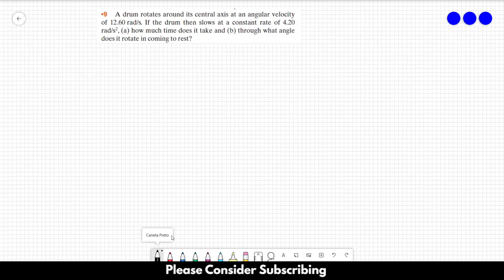Number 9. A drum rotates around its central axis at an angular velocity of 12.6 radians per second. If the drum then slows at a constant rate of 4.2 radians per second squared, how much time does it take and through what angle does it rotate in coming to rest?